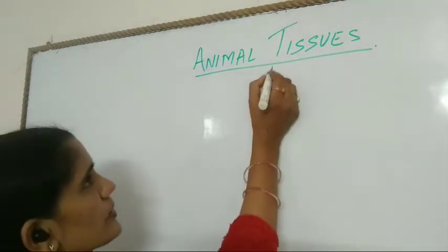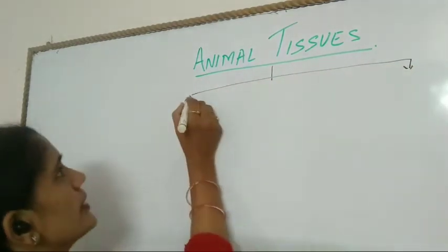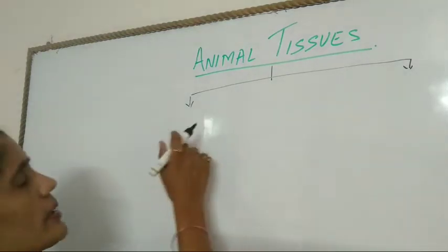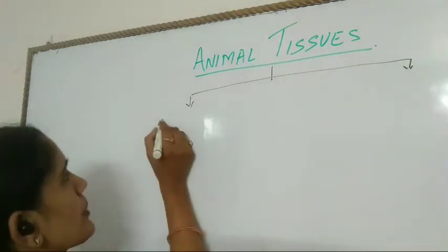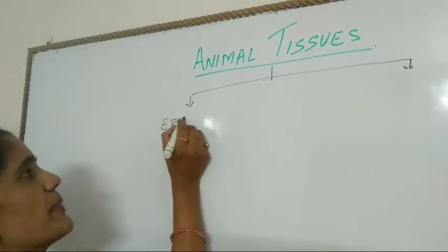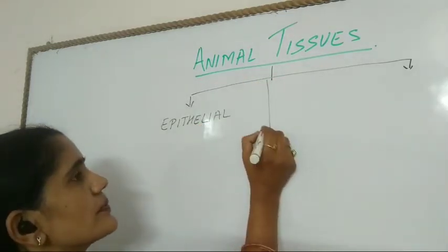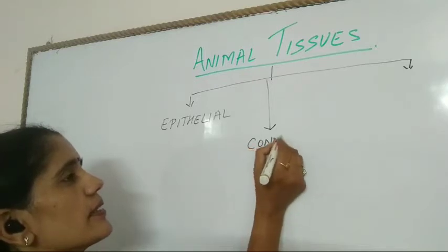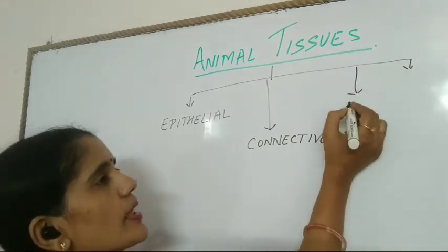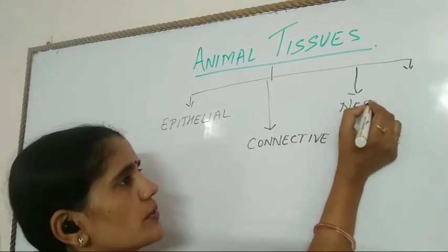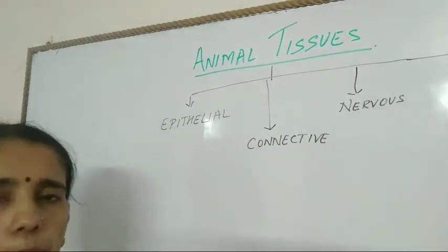Depending upon its function, animal tissues are classified into four types: epithelial tissue, connective tissue, nervous tissue, and muscular tissue.